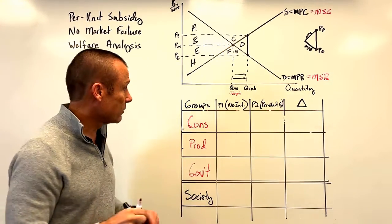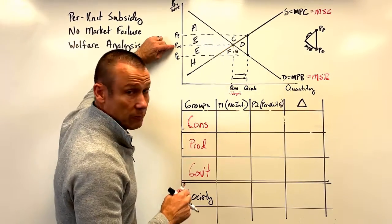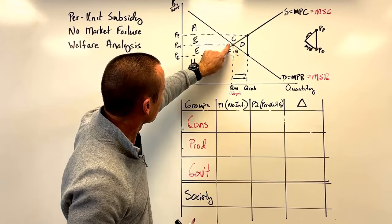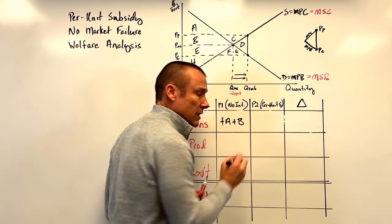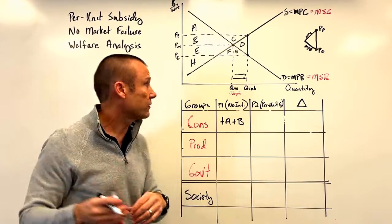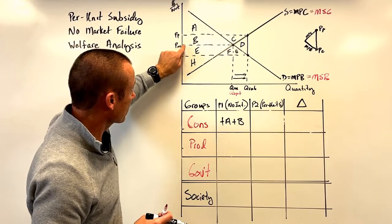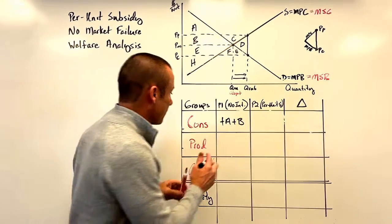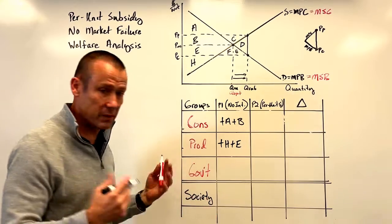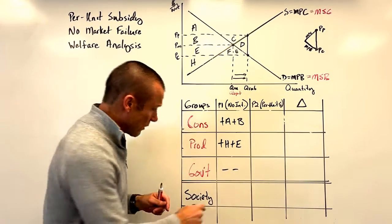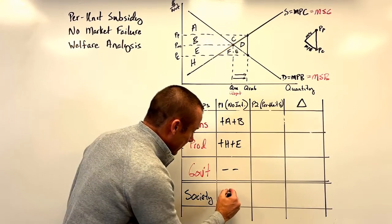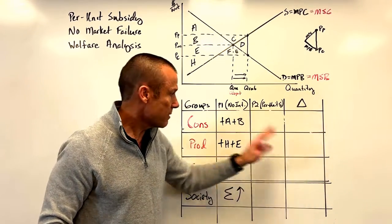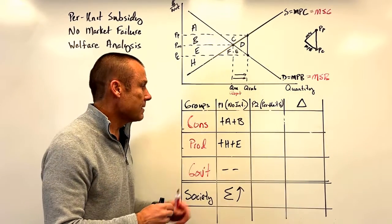Under no intervention, the consumer gets surplus based on price market to the demand curve — that's areas a and b. The producer gets surplus as the difference between price market and the marginal private cost curve — areas h and e. The government has no outlay at all. Society's surplus is everything above combined.